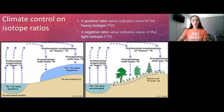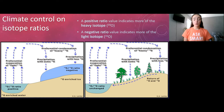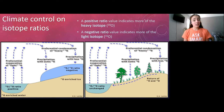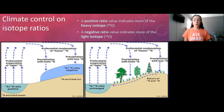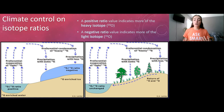Oxygen isotopes are going to fractionate during evaporation from the ocean. When evaporation occurs, it favors taking up the light isotope — water molecules with oxygen-16 rather than oxygen-18 — creating an oxygen-16-enriched and oxygen-18-depleted pool in the clouds. When precipitation occurs, the opposite happens: precipitation favors the heavy isotope and is enriched in oxygen-18. This preferential selection for one isotope over another is called fractionation.